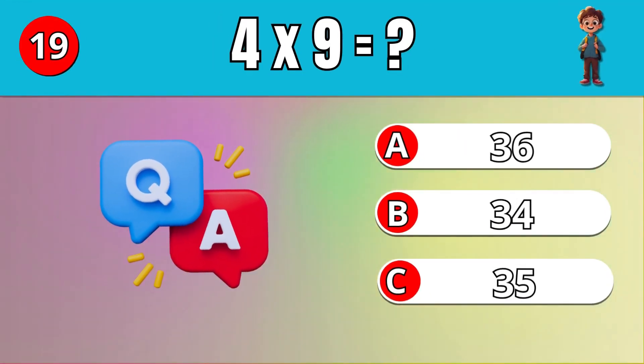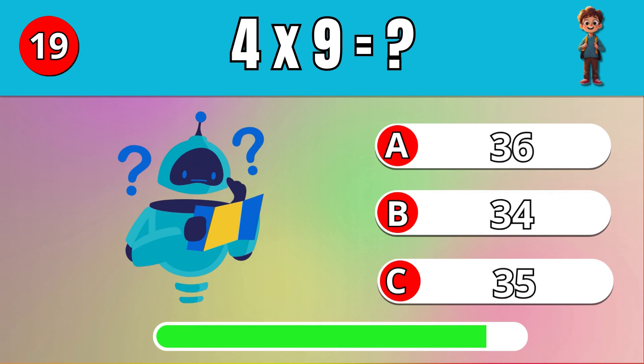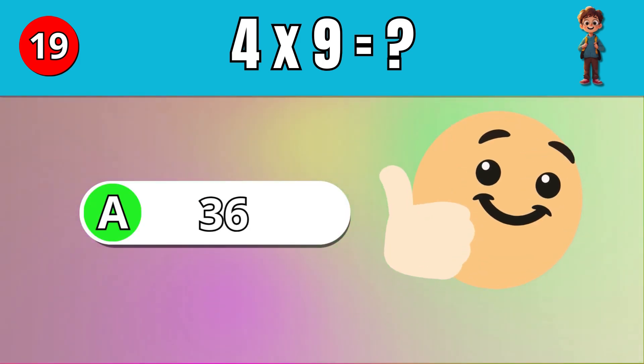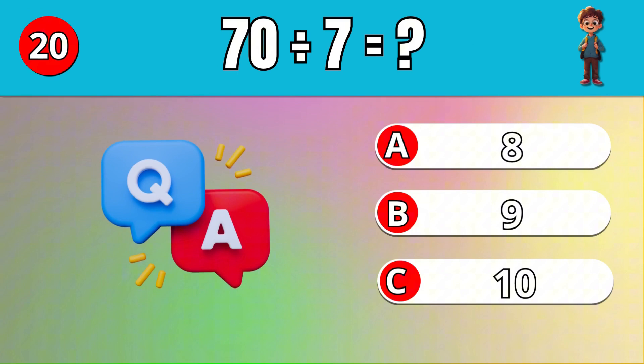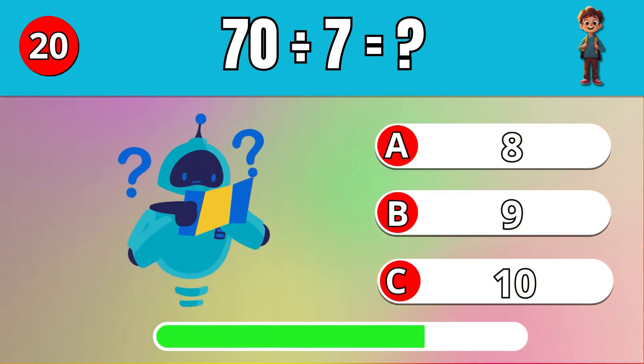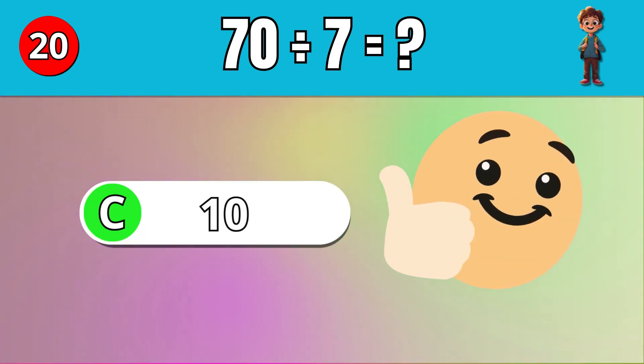What is 4 times 9? A, 36. What is 70 divided by 7? C, 10.